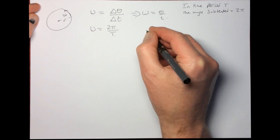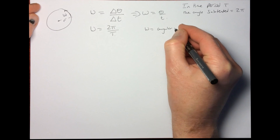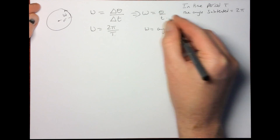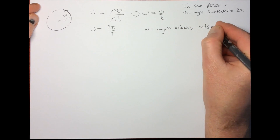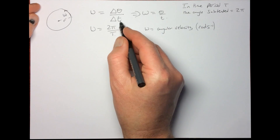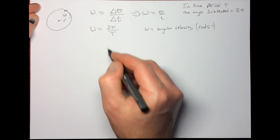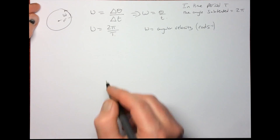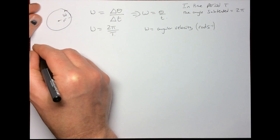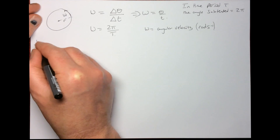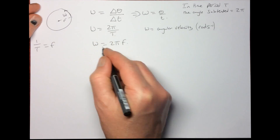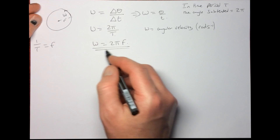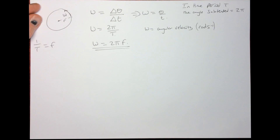The unit of omega, the angular velocity, is radians per second. At A-level we treat this as a scalar. In an entire time period the angle is 2π, so omega = 2π/T. And because 1/T equals frequency, we can also write omega = 2πf. All of these are equivalent equations for angular velocity in radians per second.